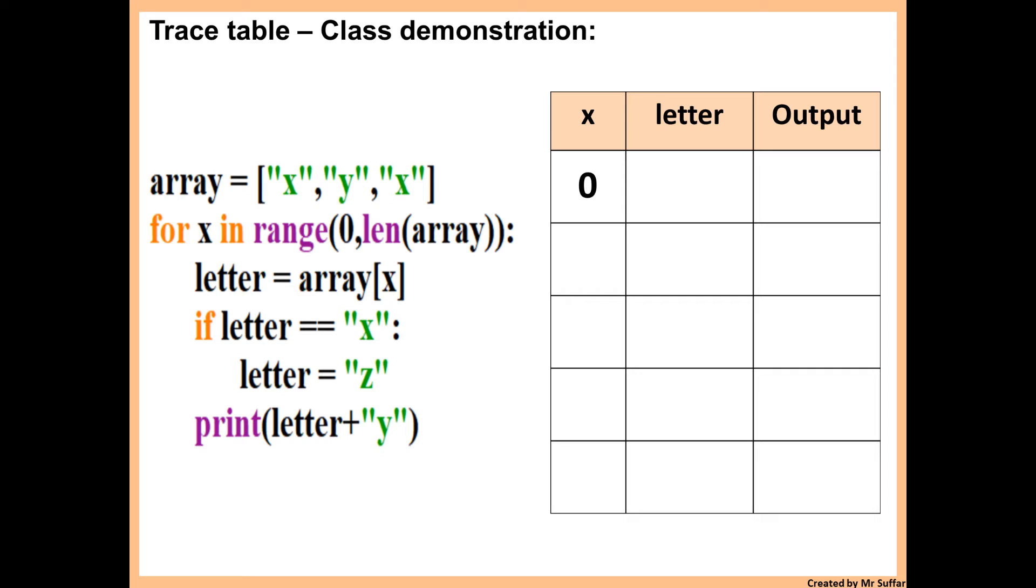Then it says letter is equal to array x. So array zero is x. So the first index of the array, which is zero, is x.